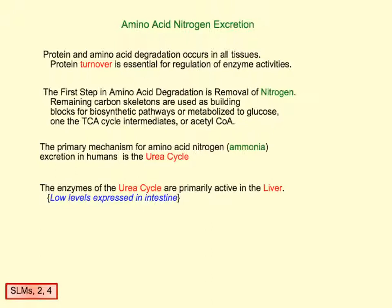Amino acids are broken down in all the tissues of our body — essentially every cell will be breaking down amino acids to control enzymatic pathways. The first step is removal of the nitrogen, which is a waste product we need to get rid of. The primary mechanism for getting rid of that nitrogen is the urea cycle. The urea cycle enzymes are primarily expressed in the liver, with some in the intestines, but the liver is what we think of for the urea cycle.